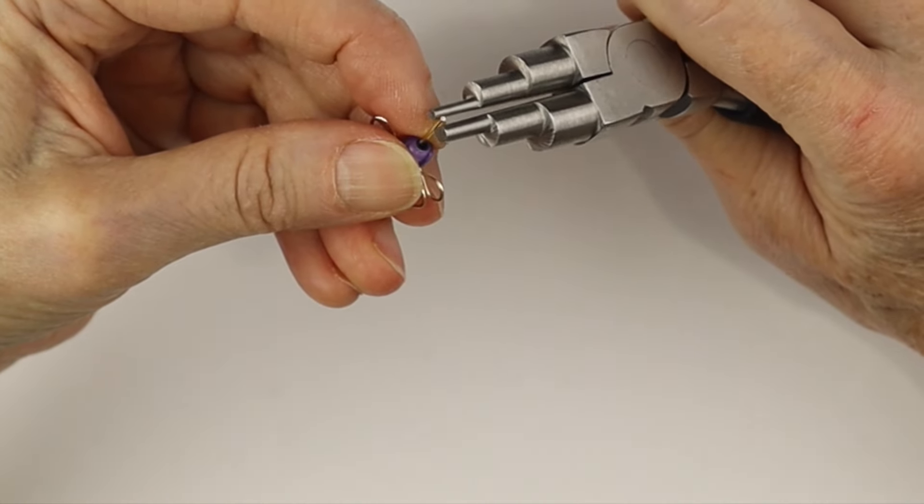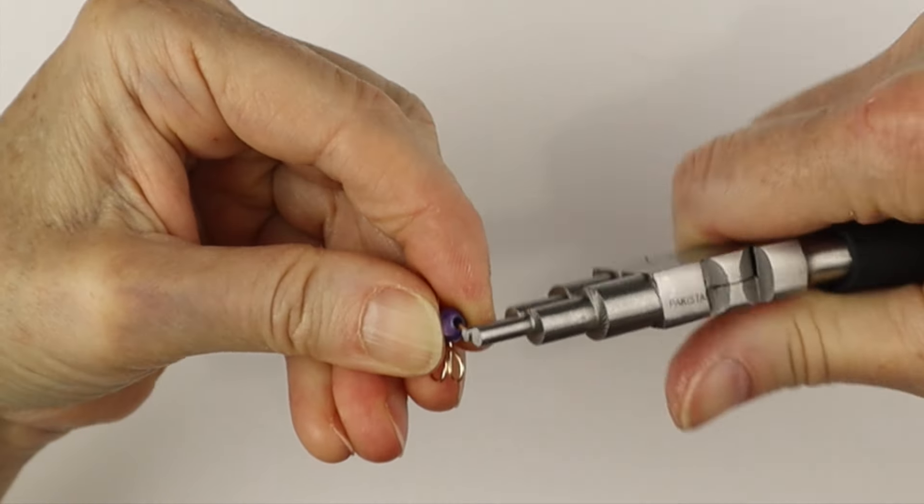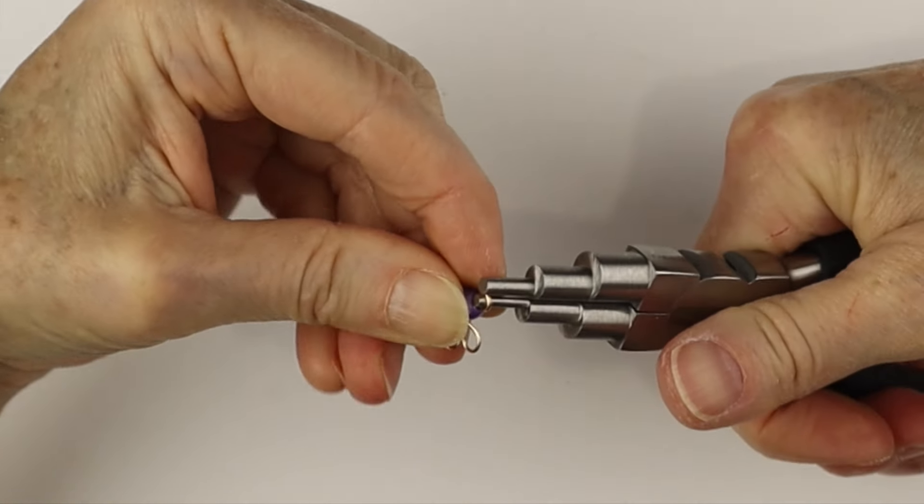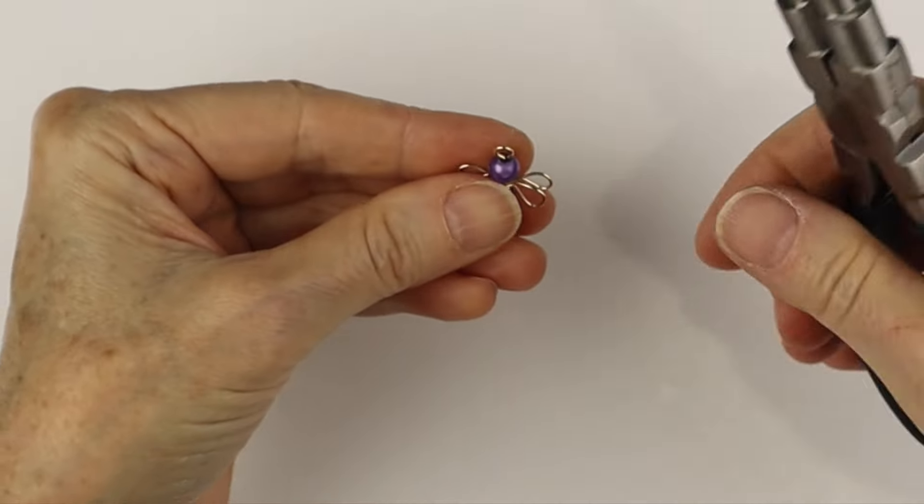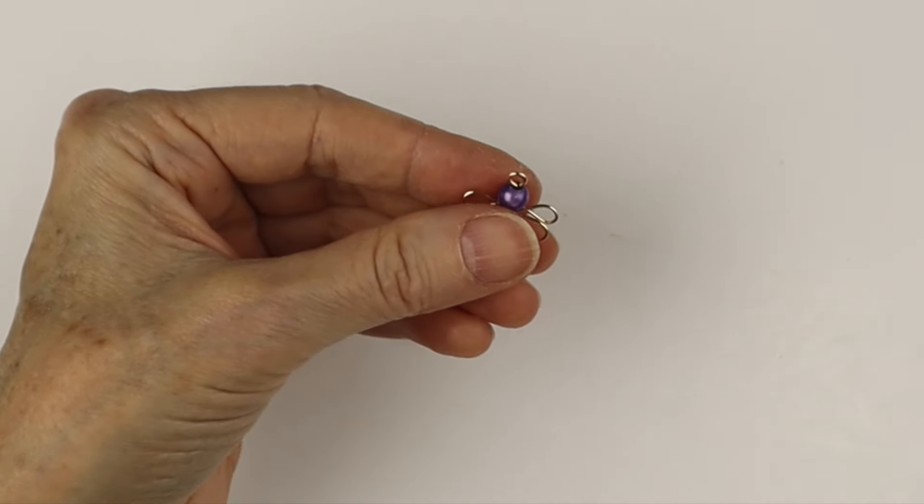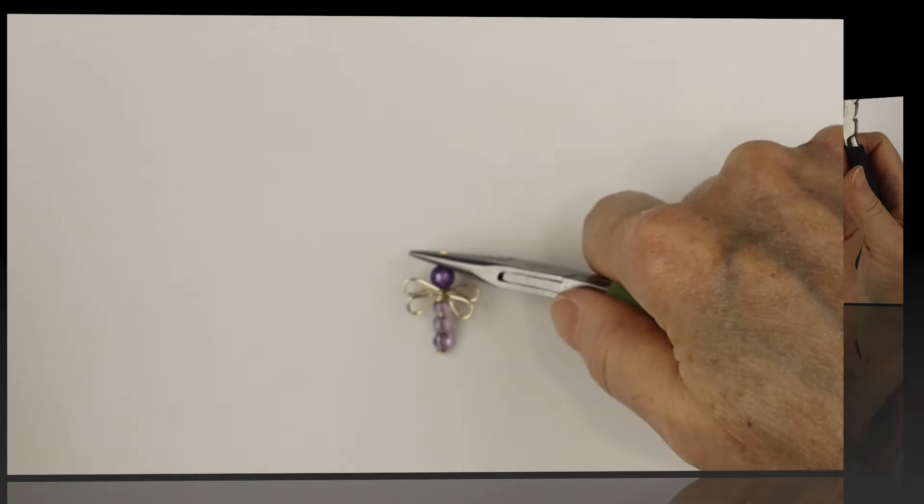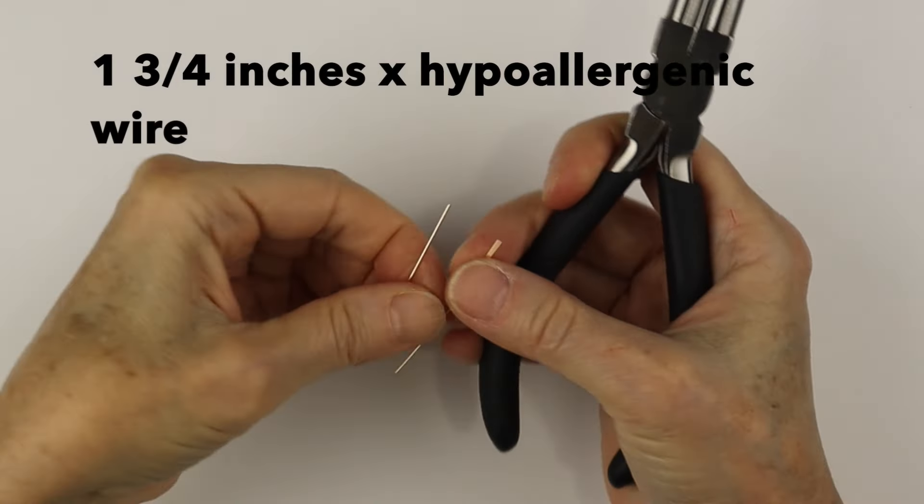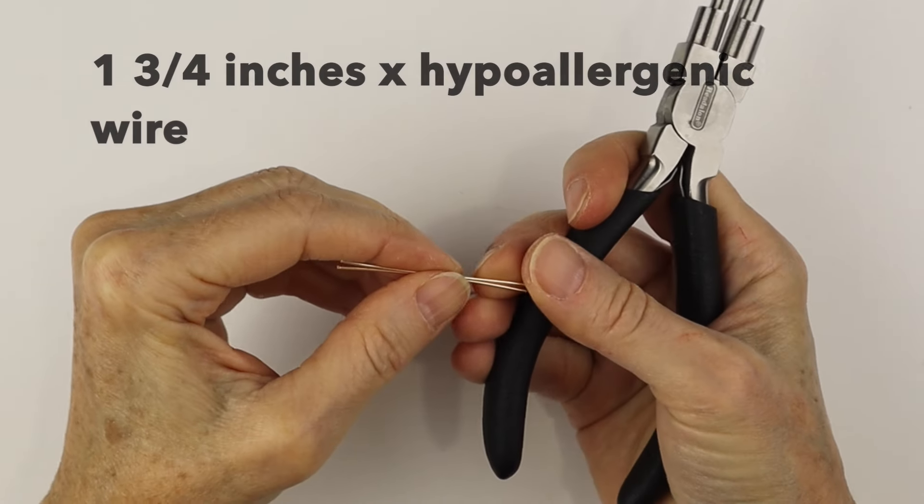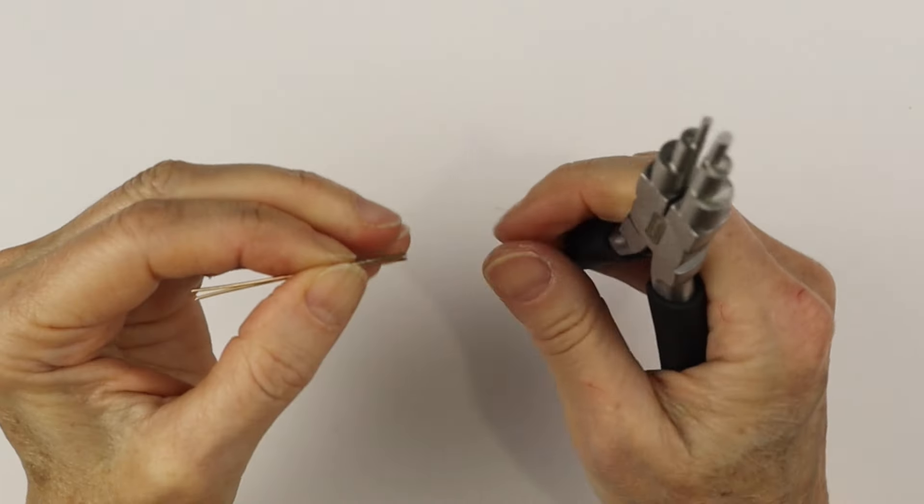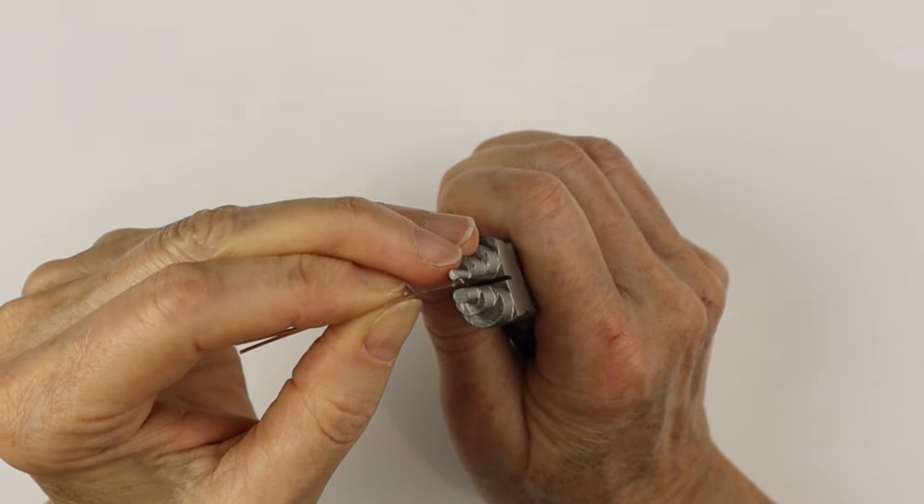Grab the end of the wire with the bail making pliers and bring it around into a closed loop. Once you have that, just push it in with the chain nose pliers so it's flat, and you can make your own earring hooks. I have lots of tutorials. You just want to use some hypoallergenic wires, especially if your ears are sensitive.